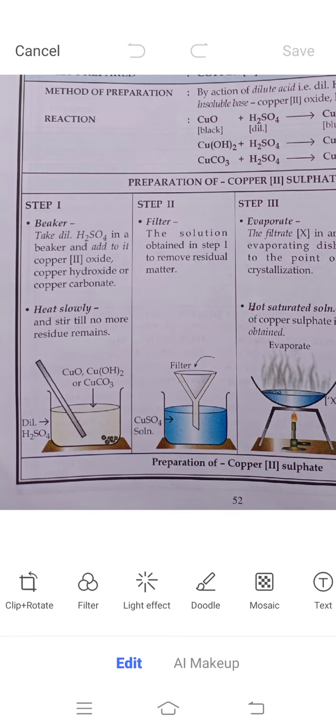Let us see step by step the preparation method. In the first step, we need to take a beaker. In the diagram you can see in the beaker you will take dilute H2SO4 and add copper oxide or copper hydroxide or copper carbonate. We will stir it slowly. Since copper oxide is insoluble base, we will heat it. On slight heating it will get dissolved.